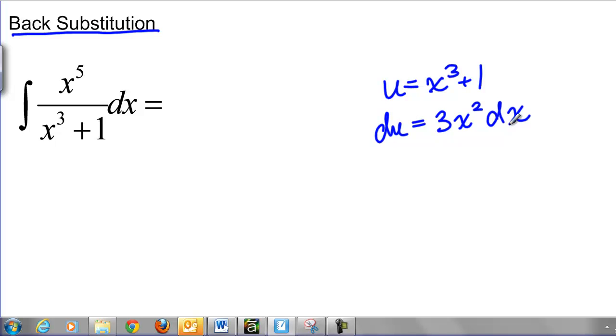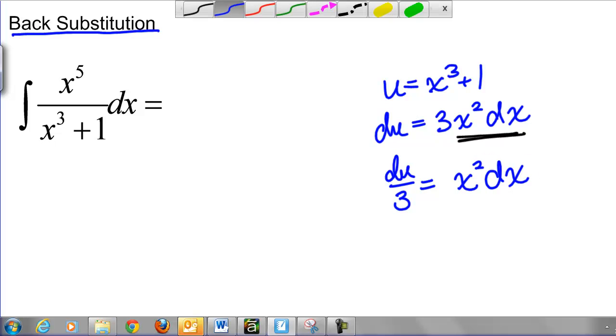And now I'm going to rewrite my integral because I need an x squared dx. Remember last time we put a 3 on the other side, so we can do that again. That 3 is not a big deal. But the x squared dx, that is a big deal. We need to be able to take an x squared dx and turn it into something with du's in it. So du over 3.